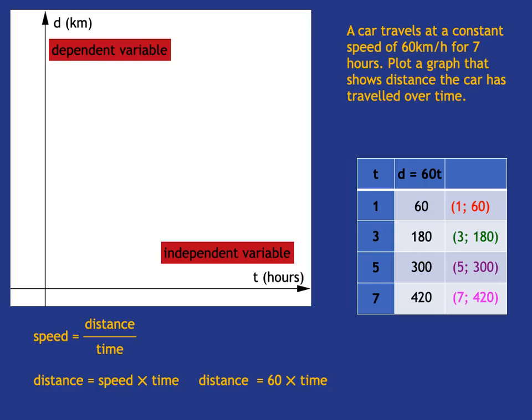So now I can see, look, I've got, I knew my horizontal, my time axis had to go from 0 through to 7. But now I can see that my distance axis, the y-axis has to go all the way up to 420 at least. So then I'm going to have to work that out quite carefully so I can plot it nicely.